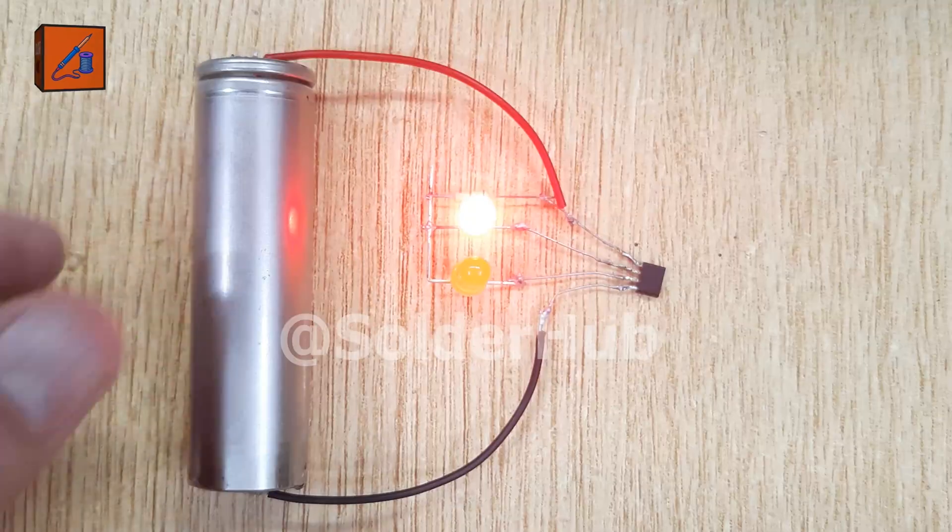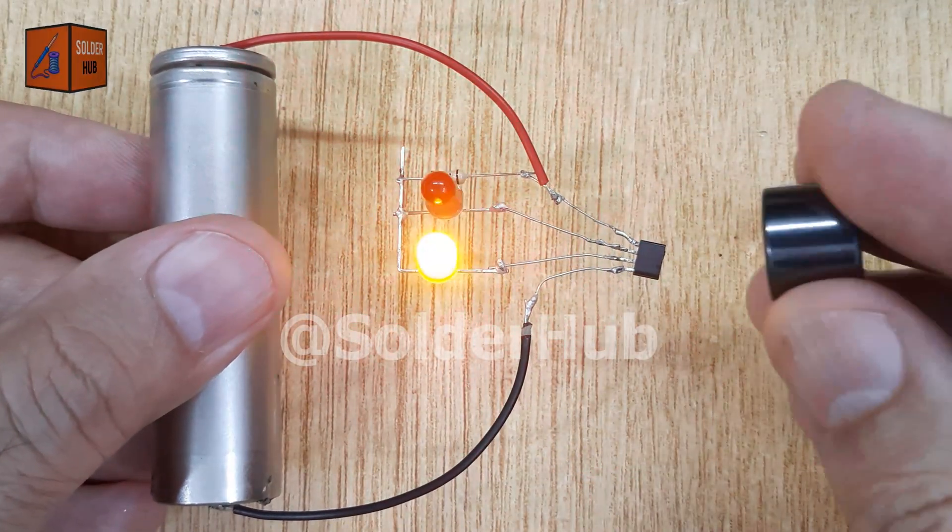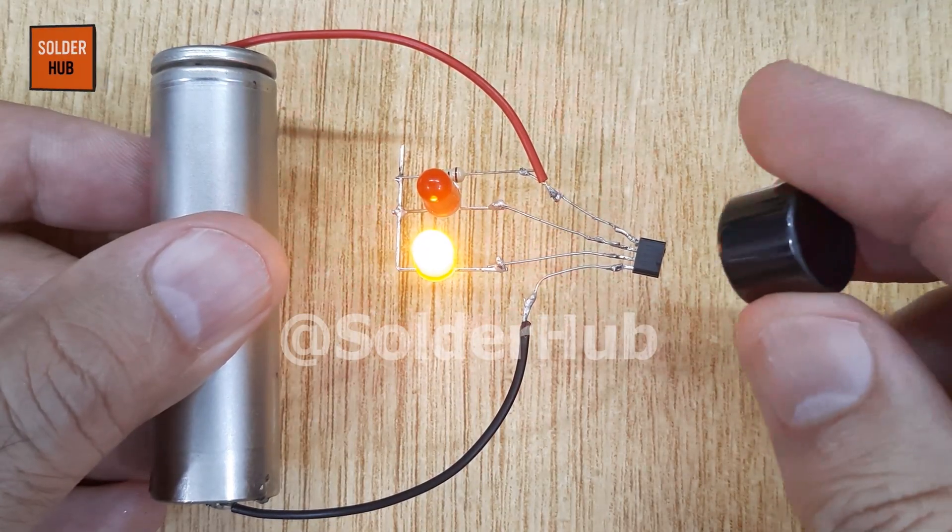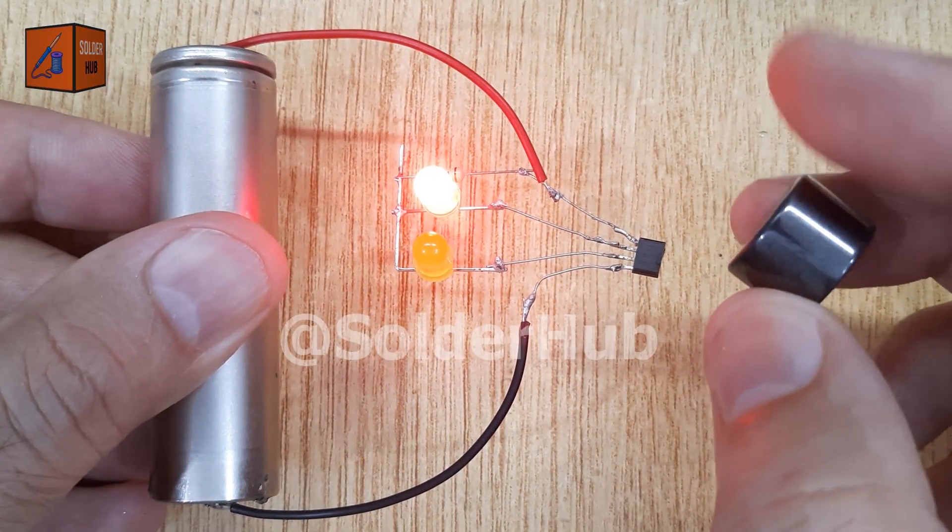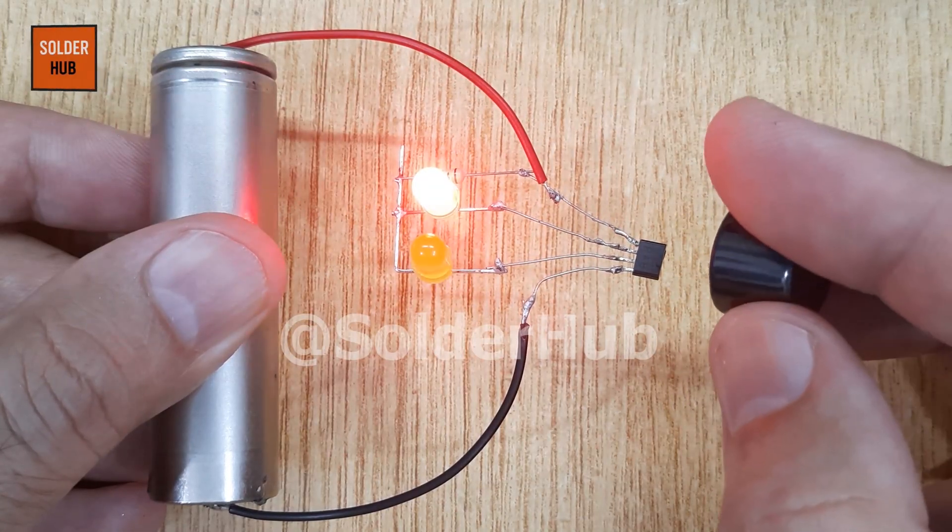Now comes the real test. When I bring a magnet near the hall effect sensor, the sensor detects the magnetic field and the yellow LED turns on. When I flip the magnet's polarity and bring it near again, the red LED lights up instead. It feels almost magical, but it's actually science at work.